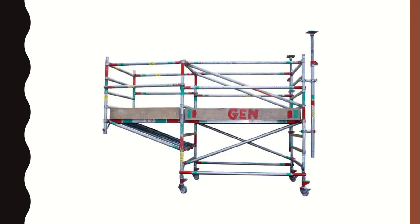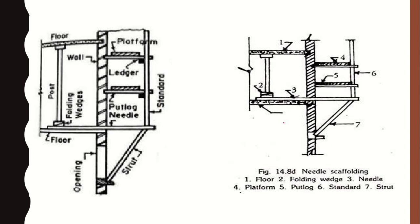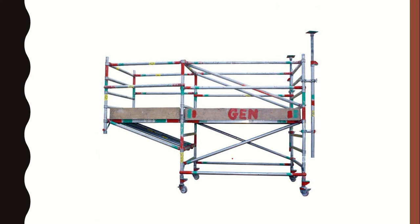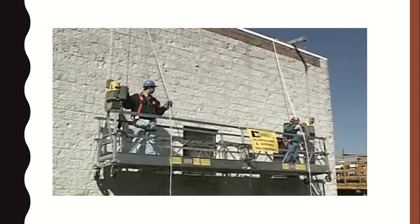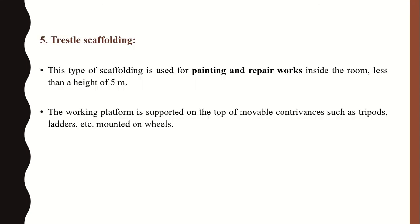Suspended scaffolding is different from cantilever scaffolding in that the platform is completely suspended from the roof of the building downward, with no supports from the bottom. It is hung using ropes or chains, and the boarding or platform can be raised or lowered as needed. This type is used when there is traffic or activity at the bottom that prevents providing supports from below.